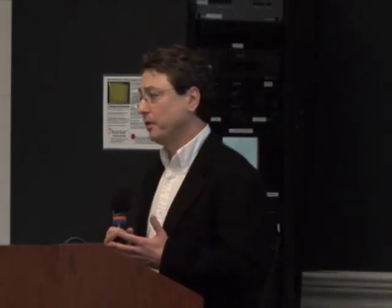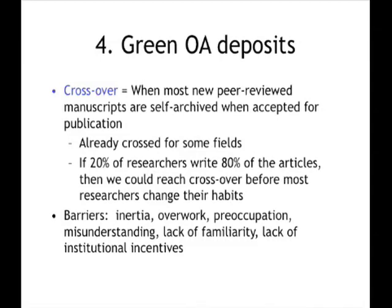There'll be an important crossover when most peer-reviewed manuscripts are self-archived right away — deposited in a green open access repository right after being accepted for publication. We have to take the complexity of disciplines into account. In some fields we've probably already crossed over. In particle physics, it appears that 100% of new literature is deposited in some form — at least a preprint — and many peer-reviewed manuscripts are also deposited right away. Other disciplines are very far from the crossover point. If 20% of researchers publish 80% of the articles, and we can appeal to the most productive researchers first, we can reach this crossover long before we change the habits of most researchers.